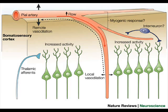Vasodilation is when the arterioles leading to the capillaries in the skin dilate or get wider, allowing more blood flow to go to the capillaries near the skin's surface. This means that more heat can be lost from the skin, and is why you might look red when you exercise.